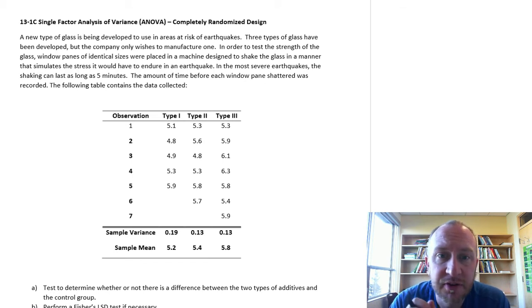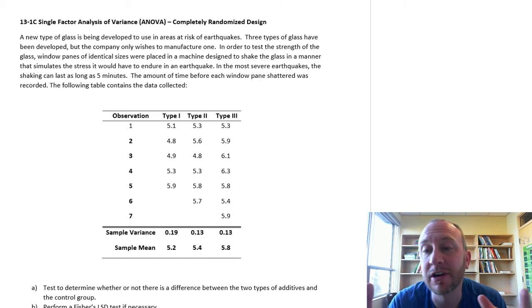Here we have three treatments, three different types of windows. We have a different number of observations for each of these samples. And so that will change our calculations just a little bit. It won't change much, but it'll take away some of the shortcuts that we would have when sample sizes are identical. That helps speed things up, so we'll lose out on that.